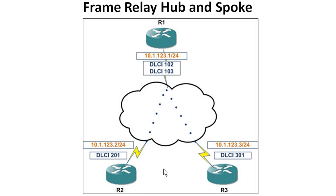Once you throw a routing protocol on here — we haven't done that yet — you're going to run into a couple of problems. One of those problems is split horizon. Basically, if we were to enable a routing protocol on here, it'd be fine with just the connections we have right now because we have our frame relay maps and it's not going to matter at this point.